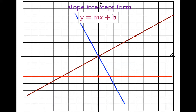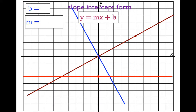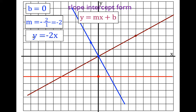Now look at that nice blue line. Write down b and m. This line also crosses the y-axis at zero, so b equals zero. The line slopes down, so we'll have a negative slope. Going up two and to the left one gives us positive two over minus one, which simplifies to minus two. So m equals minus two. The equation is y equals minus two x — we don't write the intercept when it's zero.